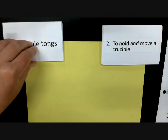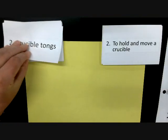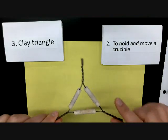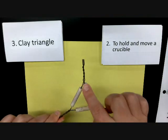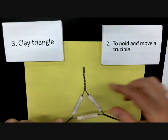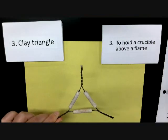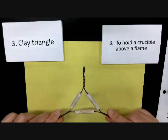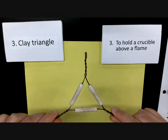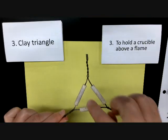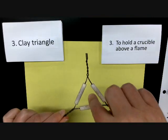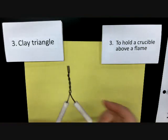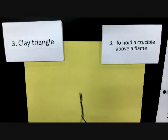The next one — the name kind of describes what it looks like — is a clay triangle. A clay triangle is in a triangular shape. It's wire with ceramic pieces, and the purpose of a clay triangle is to hold a crucible above a flame. A crucible is small enough that it will just sit right inside there, and then we would suspend it over a flame.